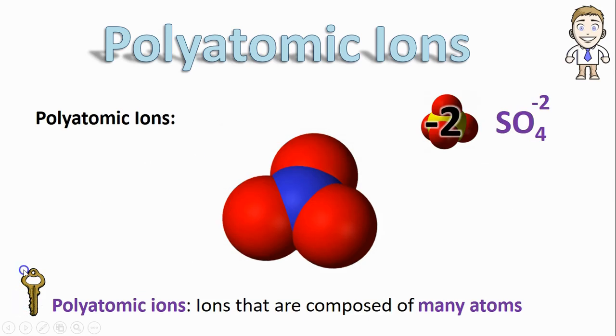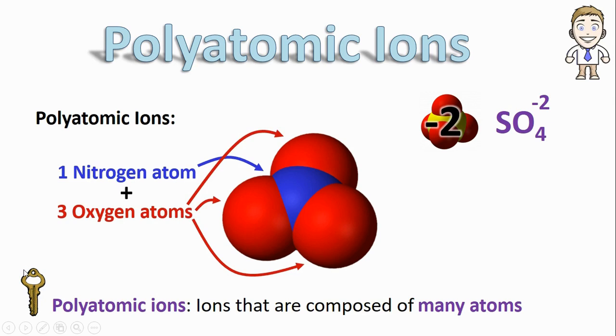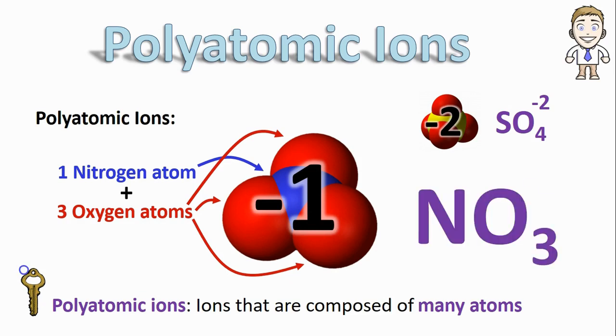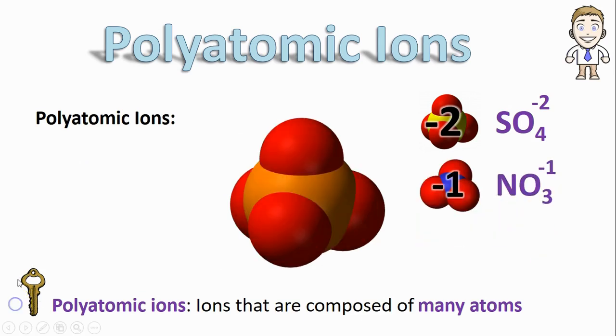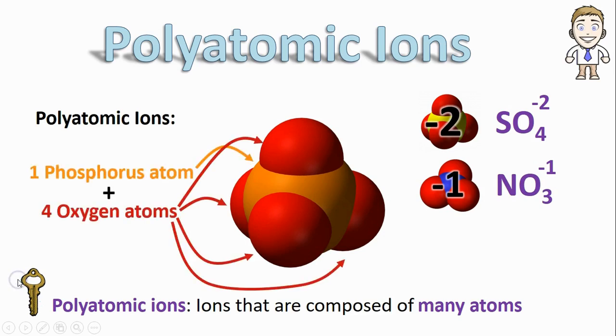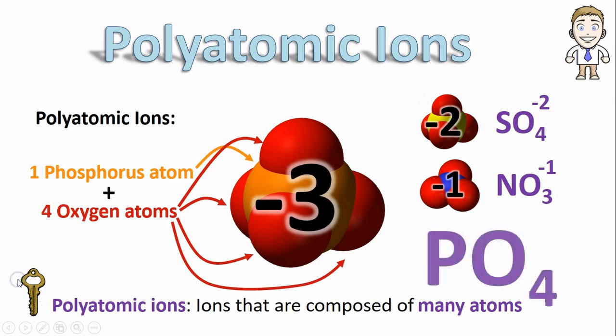Here's another example, this time with a nitrogen atom in the middle, surrounded and bound to three other oxygen atoms, all acting together with a minus one charge. The formula for this would be NO3 minus one. And here's just one more example. This is a phosphorus atom surrounded by four oxygens, all with a minus three charge. The formula would, of course, be PO4 minus three.